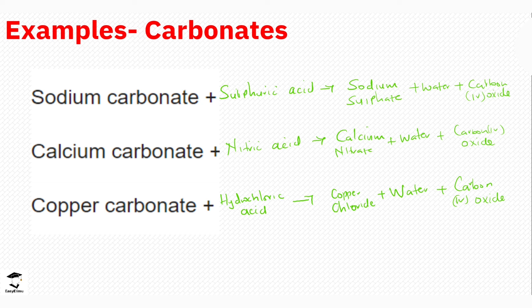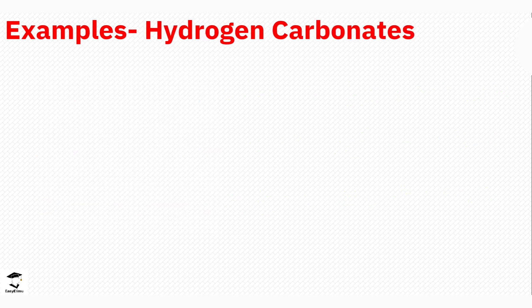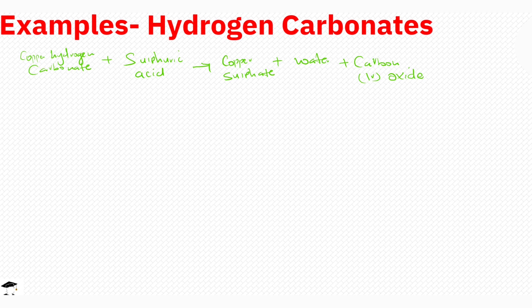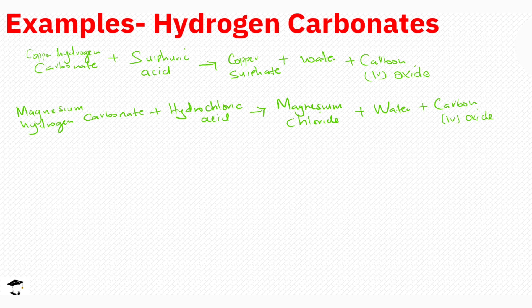You can try other carbonates by yourself and react them with other acids, practicing writing word equations — this will help later when we start writing chemical equations. Hydrogen carbonates behave in the same manner. For example, copper hydrogen carbonate reacts with sulfuric acid to form copper sulfate, water, and carbon dioxide. Magnesium hydrogen carbonate reacts with hydrochloric acid to form magnesium chloride, water, and carbon dioxide.